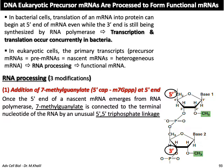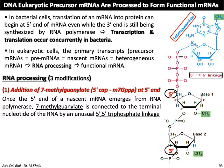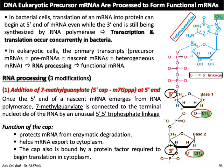The 5' cap involves adding the modified nucleotide 7-methylguanylate to the 5' end of the mRNA once it emerges from RNA polymerase, connected by an unusual 5'-to-5' triphosphate linkage. The first two nucleotides are also modified: the OH group is converted to a methyl group, making it non-functional. The functions of the cap are to protect the messenger RNA from enzymatic degradation, help export the mRNA to the cytoplasm, and to be bound by a protein factor required to begin translation in the cytoplasm.